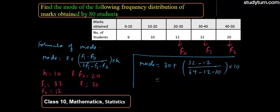So further simplify: 30 plus 32 minus 12 is 20, divided by 32, whole multiplied by 10.